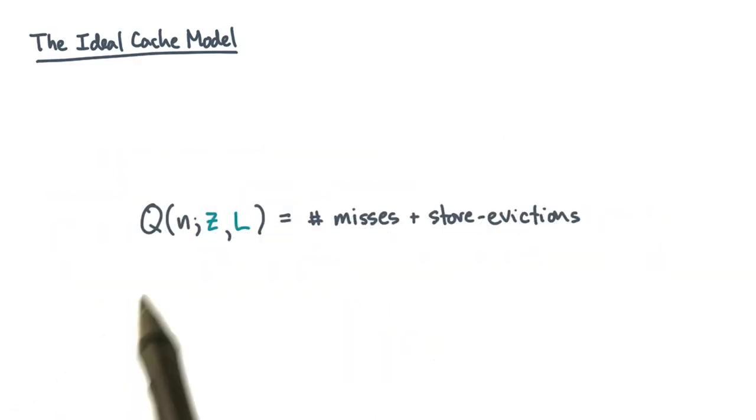One final point. Remember that in the conventional IO model, we counted memory transfers. In the ideal cache model, we do the same thing. The number of transfers is really equal to the number of misses plus the number of store evictions.